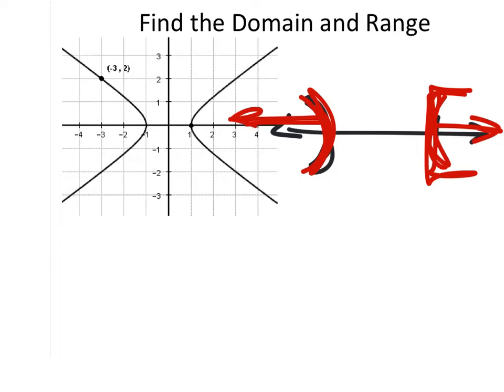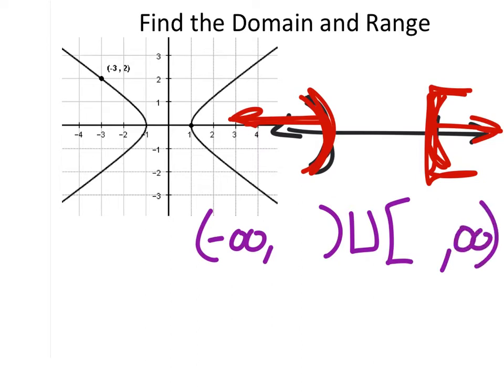So that is correct. This one would be negative infinity and then wherever this value is with a parenthesis like that, and would unite this with a square bracket, whatever that value is and this one would go to infinity, right? This is the same thing.